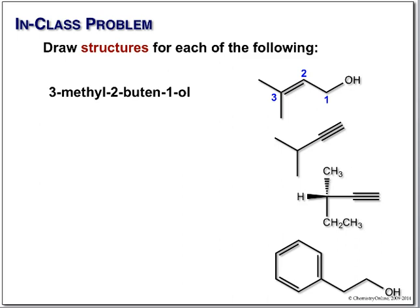Our next compound is an alkyne with nothing else in the molecule. We want to give the alkyne the lowest possible number, so we start numbering at the top of the chain. We have a one, two, three, four carbon parent — that's 'but' — and it's an alkyne, so it's a butyne. It is a 1-butyne with a methyl group at carbon three: 3-methyl-1-butyne.